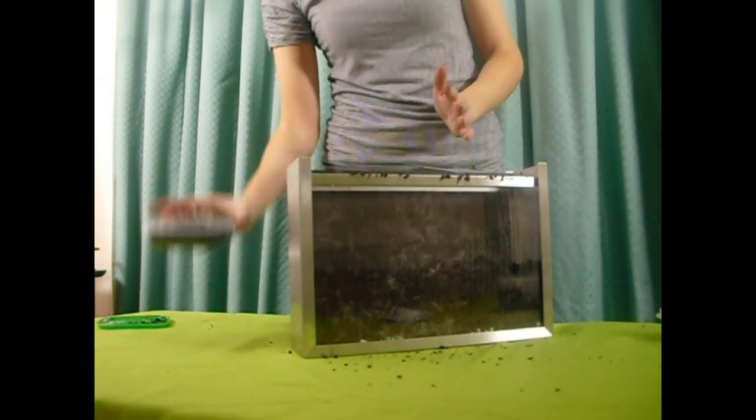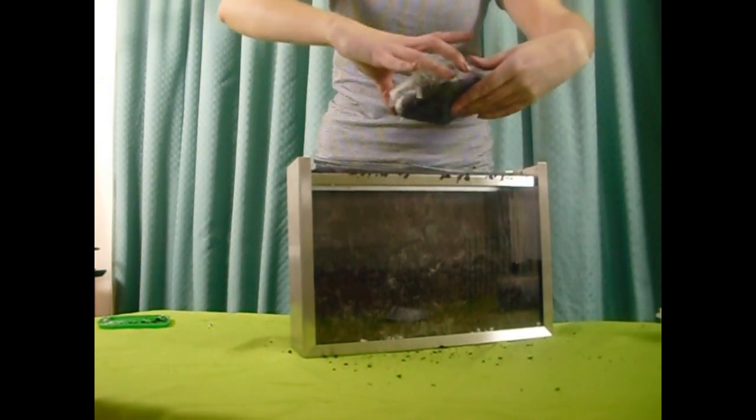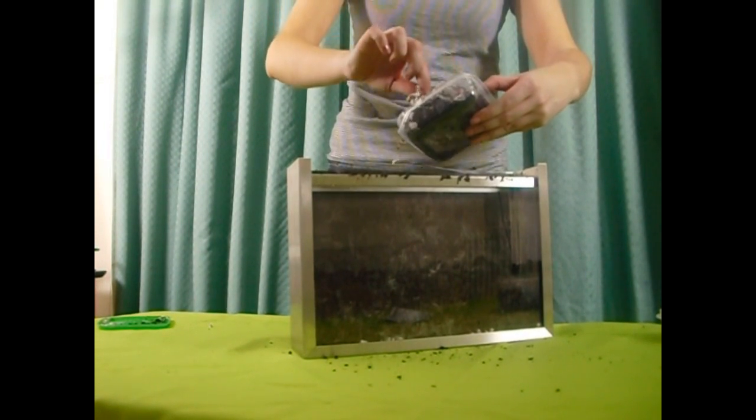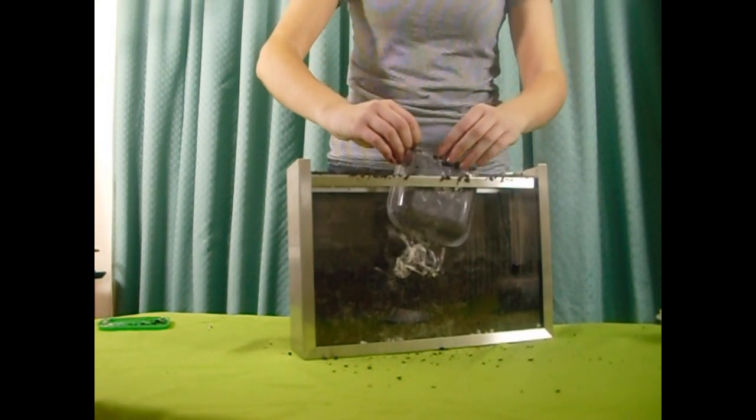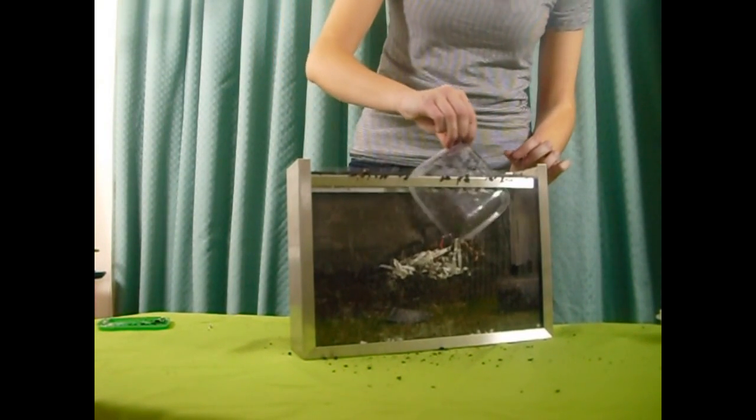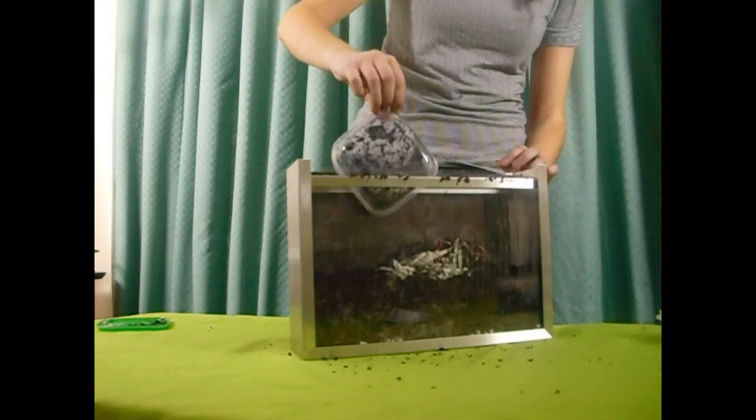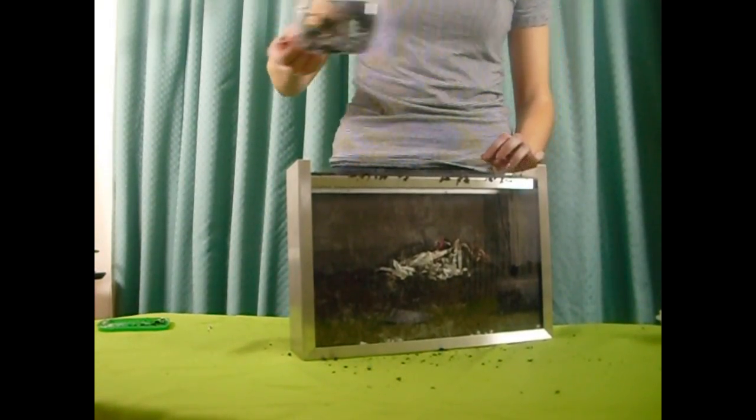When your wormery is half full, you are ready to add your worms. Your worms will come packaged in a container with newspaper and bedding. Ensure to be careful when putting your worms into the wormery, as these creatures can be slippery and fragile. The worms will immediately start to burrow into the soil and bedding as they do not like the daylight.